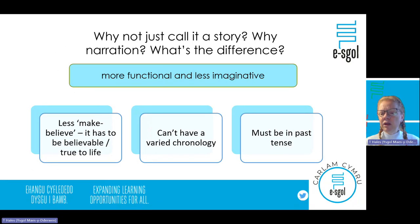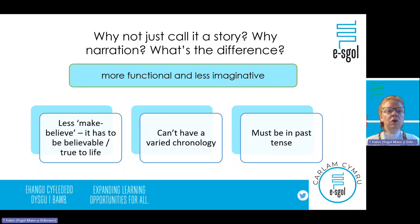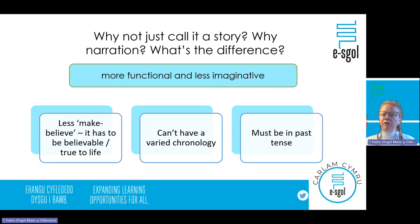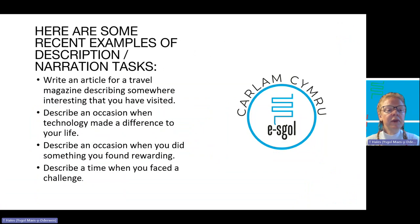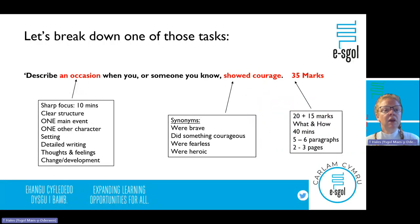Why do they call it 'narration' rather than 'story'? They tend to avoid the word 'story' because they want believable writing that is true to life. They didn't want the varied chronology that stories can have — flashbacks, flash forwards, foreshadowing. They wanted it to be straightforward, in the past tense. So narration is less imaginative and more functional. Typical tasks include: write an article describing someone you visited, describe an occasion when technology made a difference, describe an occasion you found rewarding, or describe a time you faced a challenge.